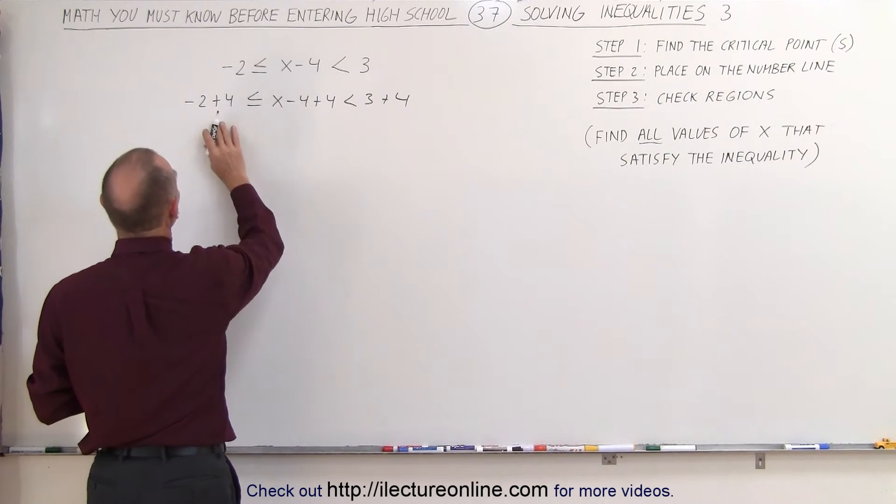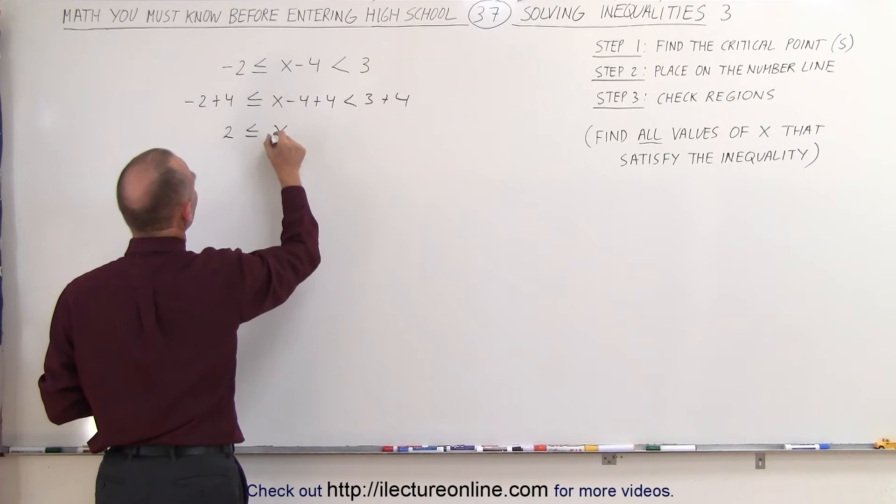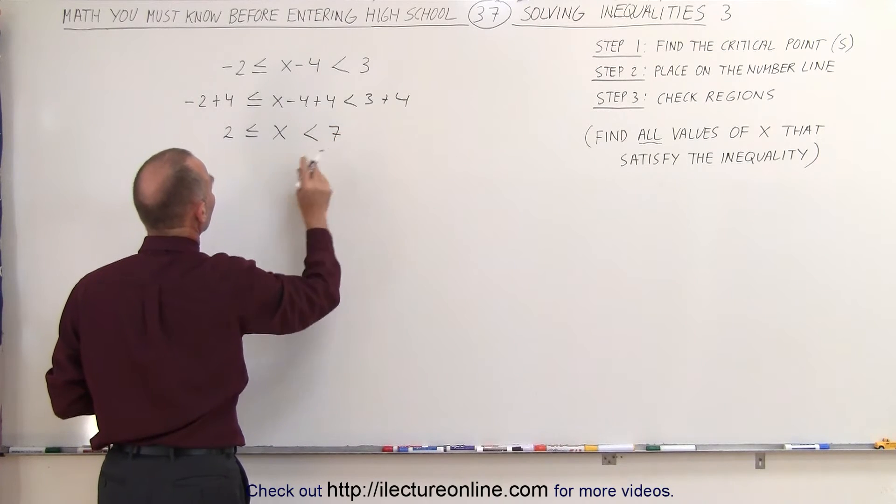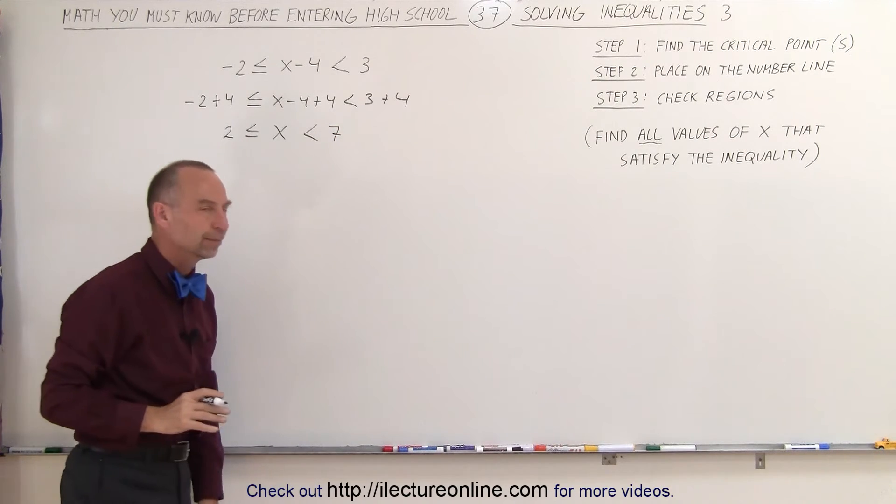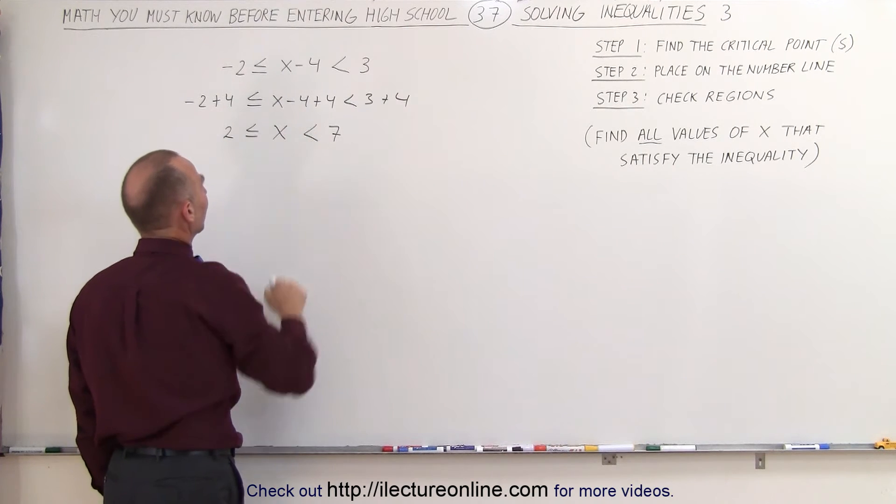By doing that, the left side becomes a positive 2, less than or equal to simply an x without the number, less than 3 plus 4, which is 7. And now this looks a lot cleaner. Now we see that x lies between 2 and 7.